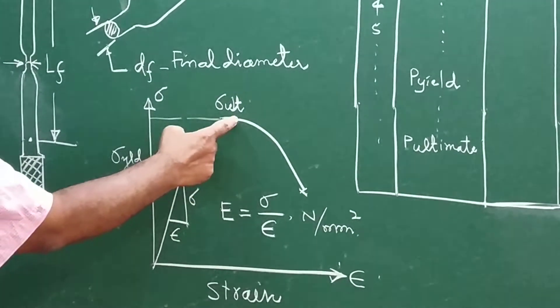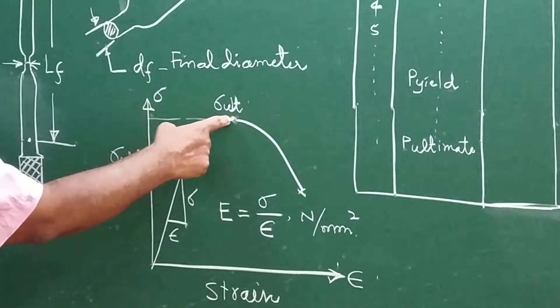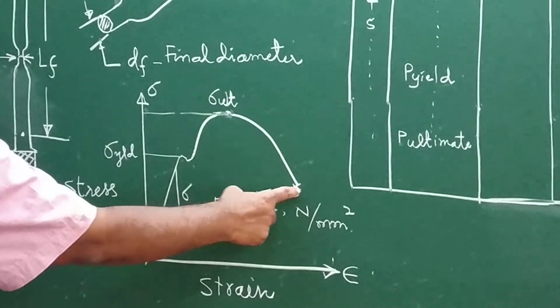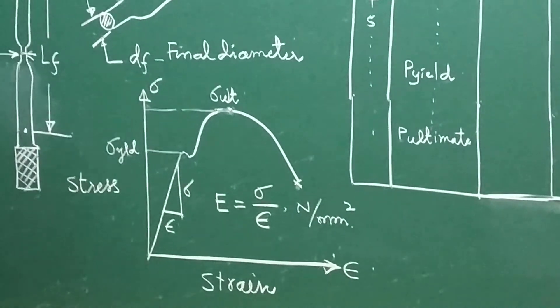Then this graph continues. The highest point is called the ultimate stress. Then because of the reduction in area, the curve goes down. And at this point, the specimen breaks. That is called the fracture point.